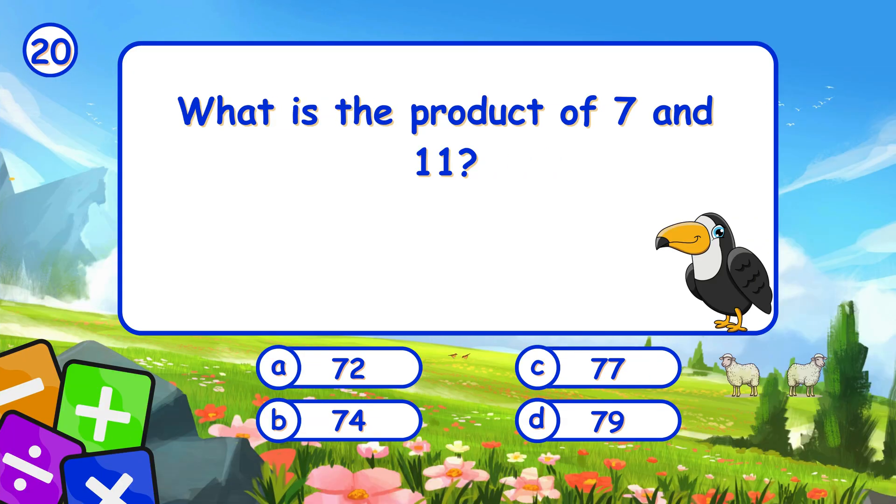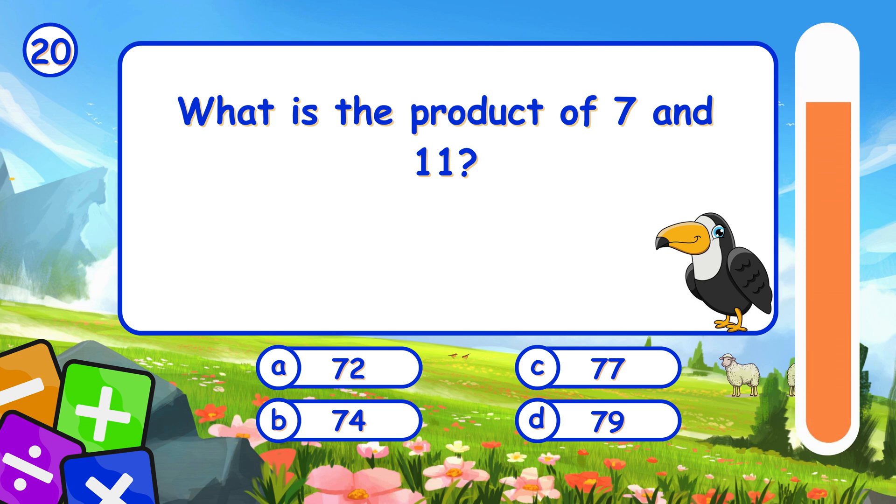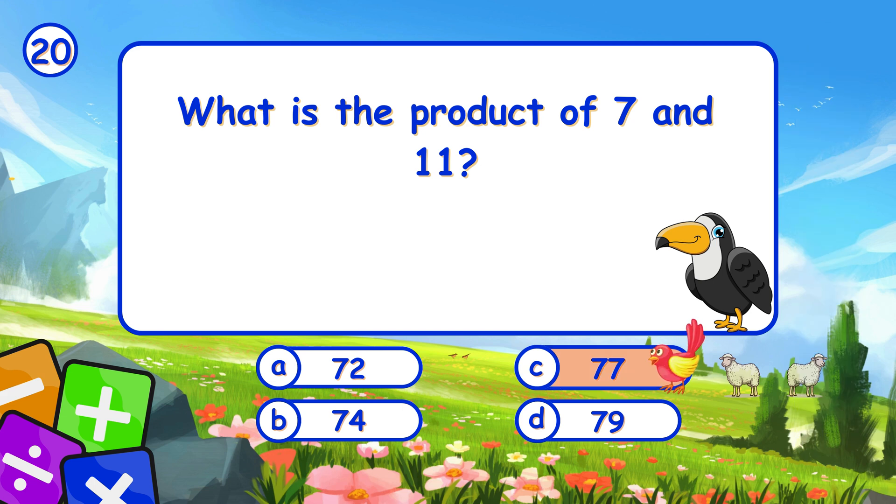What is the product of 7 and 11? The product of 7 and 11 is 77.